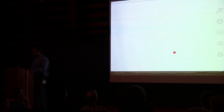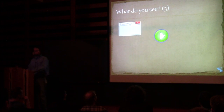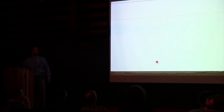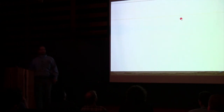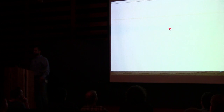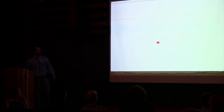Let's do one more example. What is this? Audience: A stalker. A stalker follows the mouse. So we have a ball here that follows the mouse or is at the mouse. Now, what is the mouse cursor? How can we describe that?